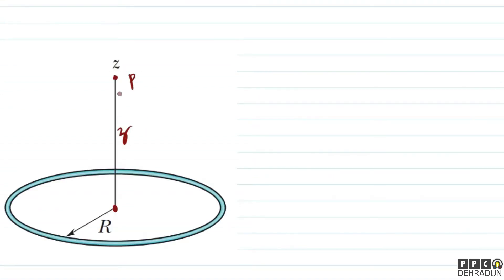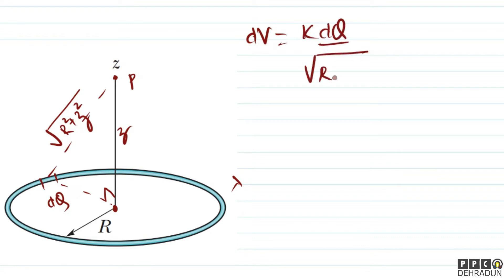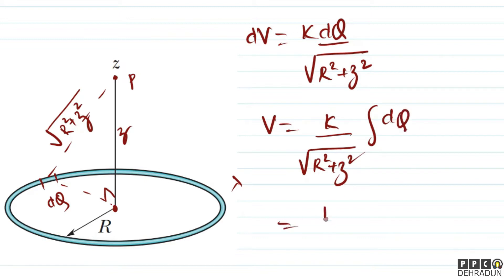Point P is at distance Z from the center. For any small element on the ring with charge dq, the distance from that element to point P is the hypotenuse of a right triangle — √(R² + Z²). So dV = k·dq / √(R² + Z²). Integrating, since k/√(R²+Z²) is constant, V = k/√(R²+Z²) × ∫dq = k·(total charge)/√(R²+Z²), where total charge = lambda × 2πR.